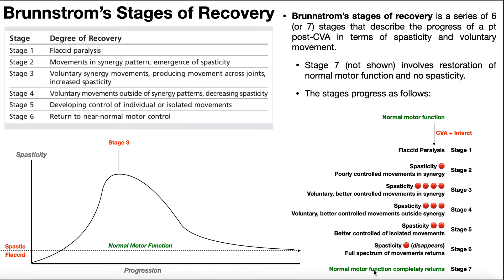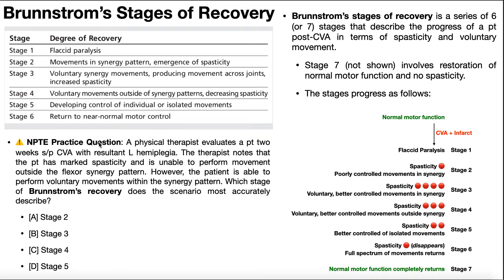Let's look at an actual NPTE practice question. A physical therapist evaluates a patient two-week status post-CVA with resultant left hemiplegia. The therapist notes that the patient has marked spasticity and is unable to perform movement outside the flexor synergy pattern. However, the patient is able to perform voluntary movements within the synergy pattern. What stage of Brunnstrom's recovery does this scenario most accurately describe?